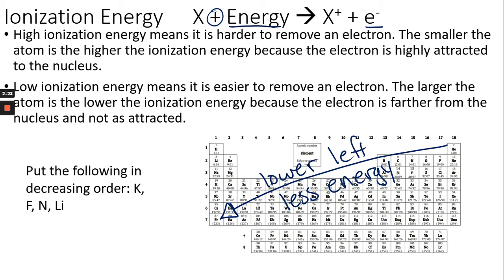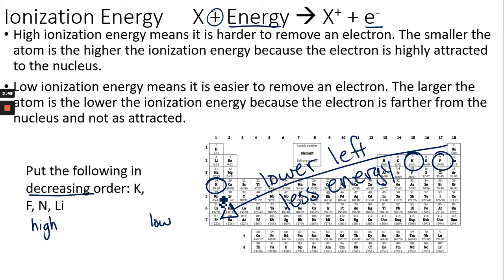For a question asking to put elements in decreasing order of ionization energy, decreasing means you start with high energy and end with low. Find these elements — potassium, fluorine, nitrogen, and lithium — and go from the upper right down to the lower left. Potassium would have the lowest, fluorine the highest, and working across the order would be: fluorine, nitrogen, lithium, then potassium.